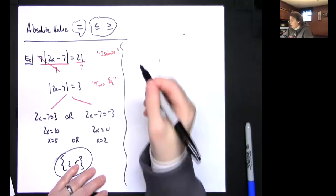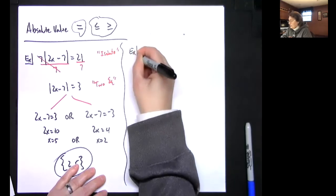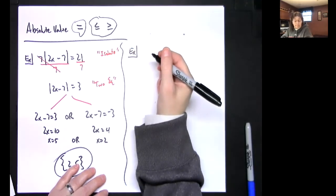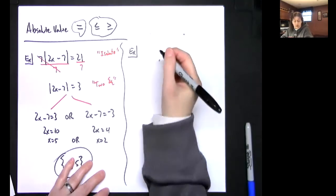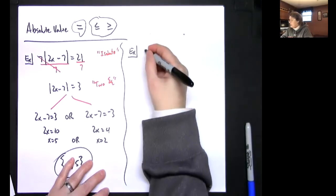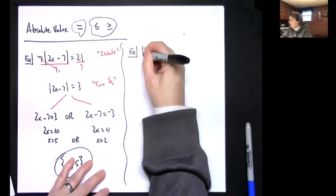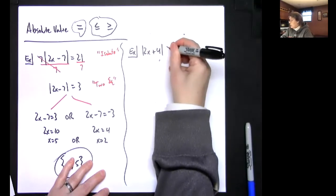So let's do, I'm going to randomly make this up and see what happens. Let's do 2x plus 4 absolute value and let's go greater than or equal to 2, and let's just see how this works. I am randomly making this up so we'll see if this works.